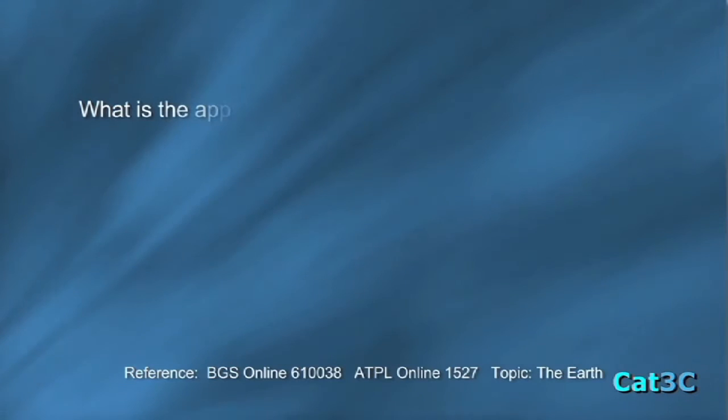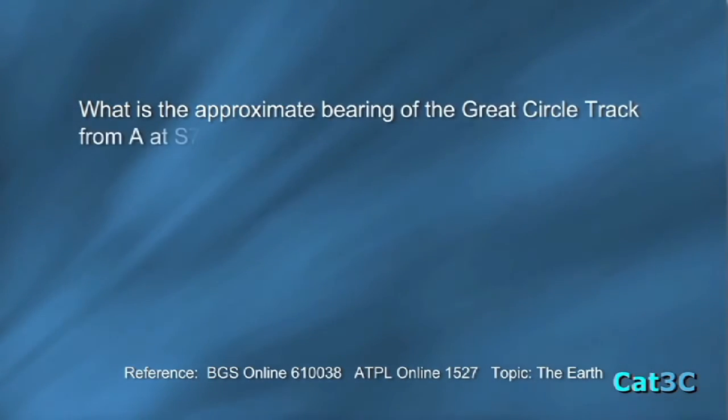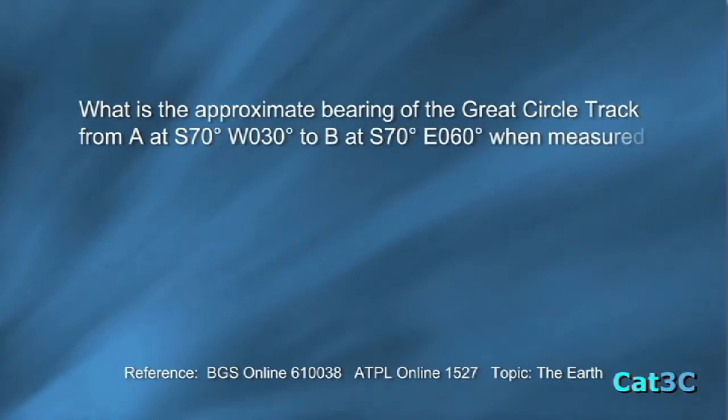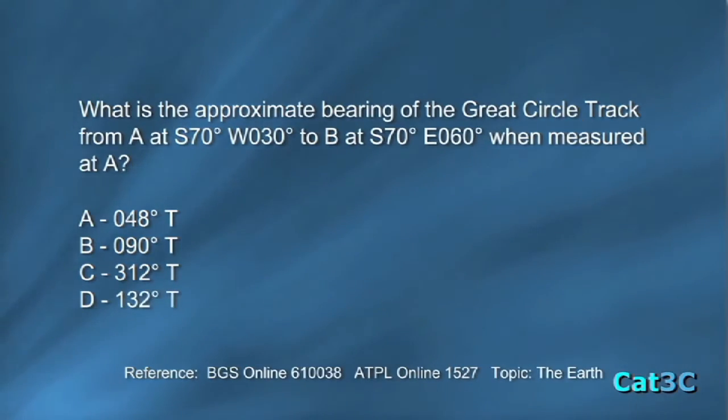What is the approximate bearing of the Great Circle track from A at South 70 West 30 to B at South 70 East 60 when measured at A? A: 048 degrees true, B: 090 degrees true, C: 312 degrees, or D: 132 degrees true.